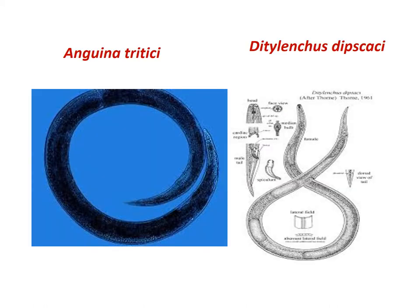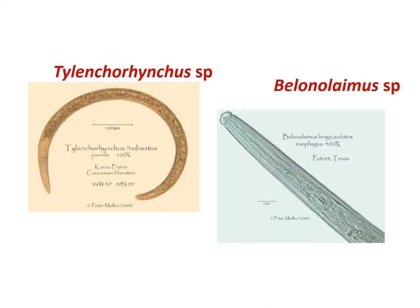This is the picture of Anguina tritici, the seed gall nematode of wheat. Next is Ditylenchus dipsaci, the stem and bulb nematode which infects onion, garlic, and others. The next nematode is Tylencorhynchus species, a stem nematode and root parasite which infects various vegetable crops. Belonolaimus species is also a stem nematode where the stylet is very long.